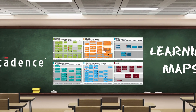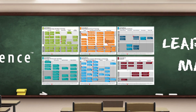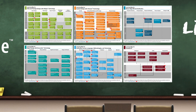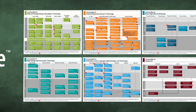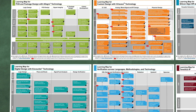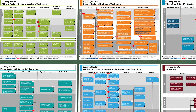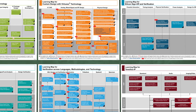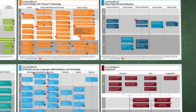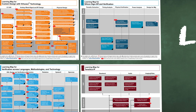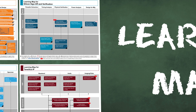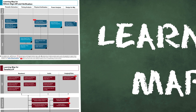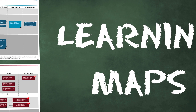Cadence Training Services Learning Maps provide a comprehensive visual overview of learning opportunities for Cadence customers. They provide recommended course flows as well as tool experience and knowledge levels to guide students through a complete learning plan. Learning Maps cover all Cadence technologies and reference courses available worldwide.